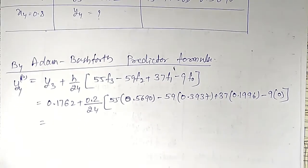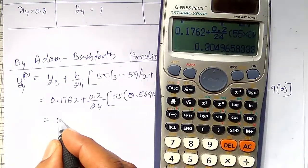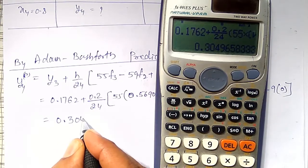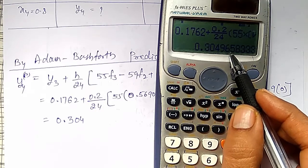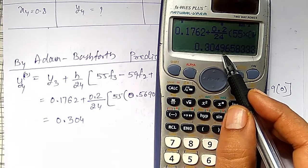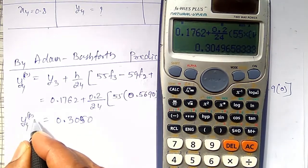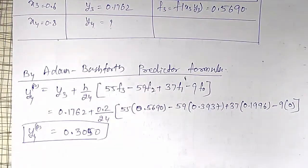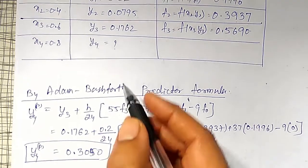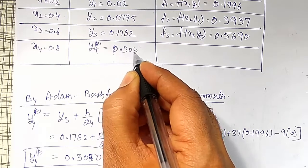Using the calculator to find this value, I come back with the final answer: 0.3050 (fifth decimal place is more than 5, so I round up). This is my y4 predictor value.